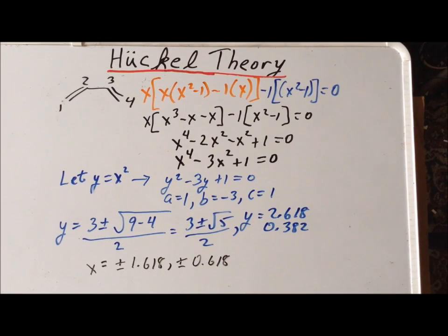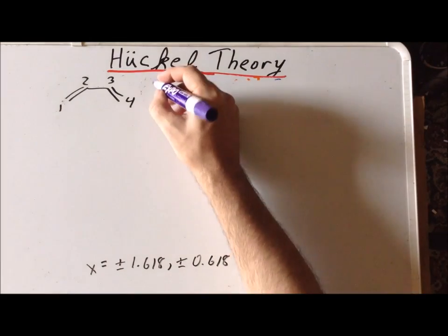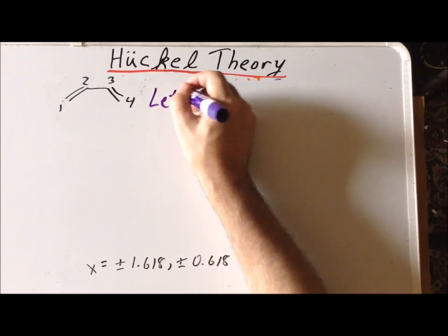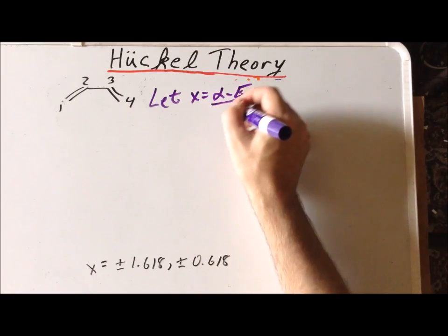So, we have four distinct roots for the quadratic equation that we found when we are trying to solve the 4 by 4 determinant equation using Huckel theory.